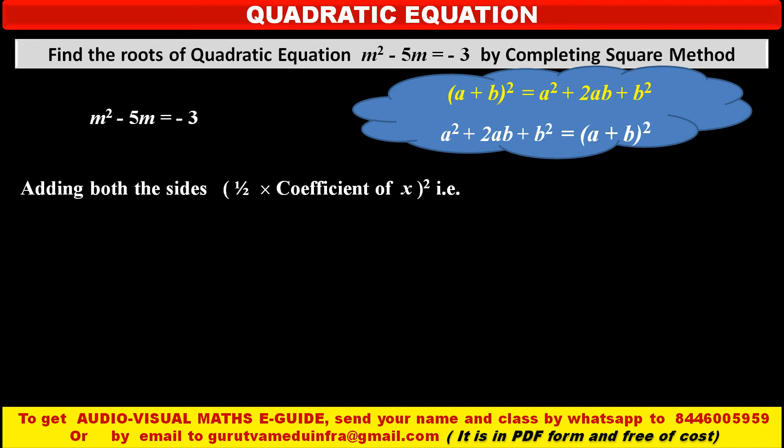So this term we have to add in both the sides, left and right. In this case coefficient of m is minus 5, so half of minus 5 whole square we have to find out. This value is 25 upon 4.